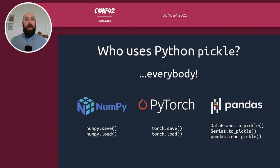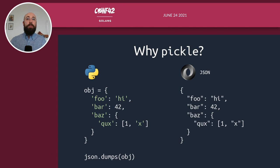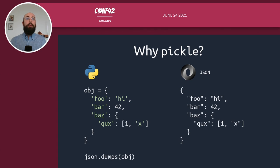You might be wondering why Python programmers would use this Pickle module over more popular and traditional data representation formats such as JSON, YAML, or XML. Let's see with a couple of simple examples. Starting with a very straightforward Python data structure — a dict containing a bunch of keys and values with many different data types: strings, numbers, and an array with mixed data types. It turns out to be straightforward to serialize this data to JSON format, and the JSON representation looks almost identical to the original Python code.